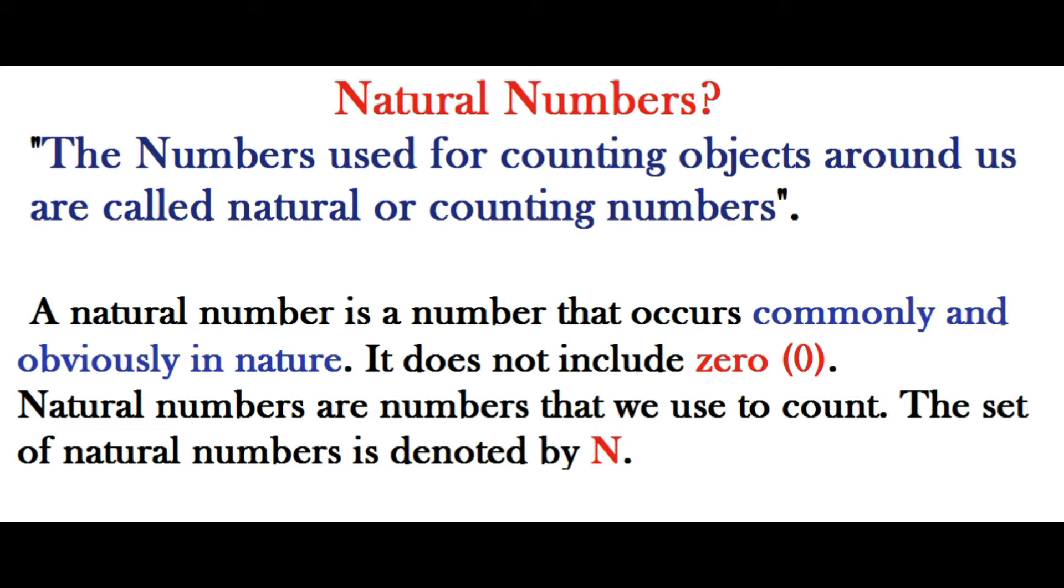These naturally occurring numbers are appropriately called natural numbers. They form the basis of all mathematics because they allow us to express and measure quantity—the property that defines how many objects there are.